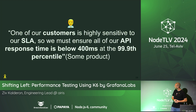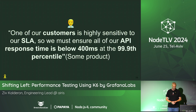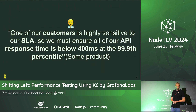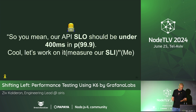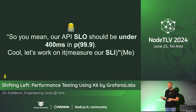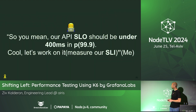This code will be available on GitHub so you can play with it. One day the product manager came and said: one of our customers is highly sensitive to our SLA — without it, he won't sign, and if he won't sign, he won't pay. So we must ensure all our API response time is below 400 milliseconds at the 99.9th percentile. So I answered: you mean our API SLO should be under 400 milliseconds at P99.9? Cool, let's work on it and measure our SLA.